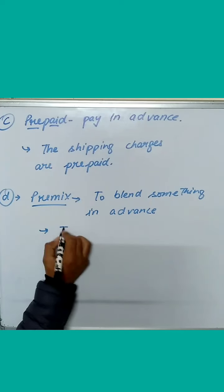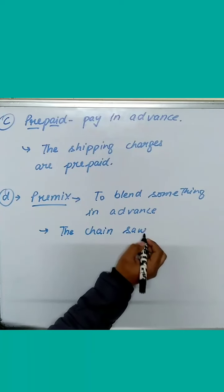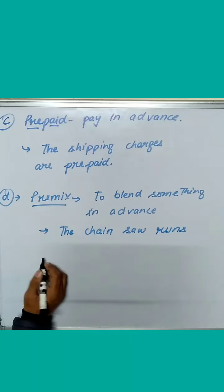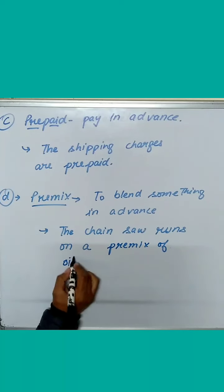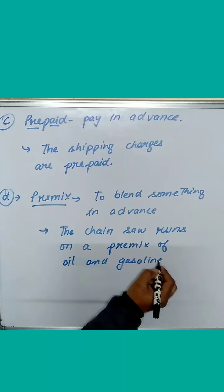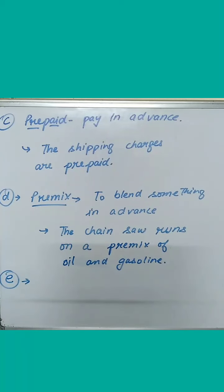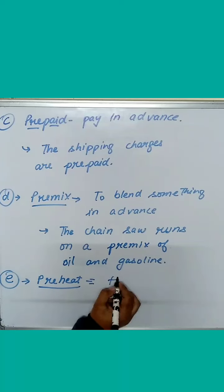Now we have the word premix. The meaning of it is to blend something. Blend means mix something, right? To blend something in advance. Now the sentence is, the chainsaw, chainsaw is kind of tool by which we can cut a wooden piece, right?